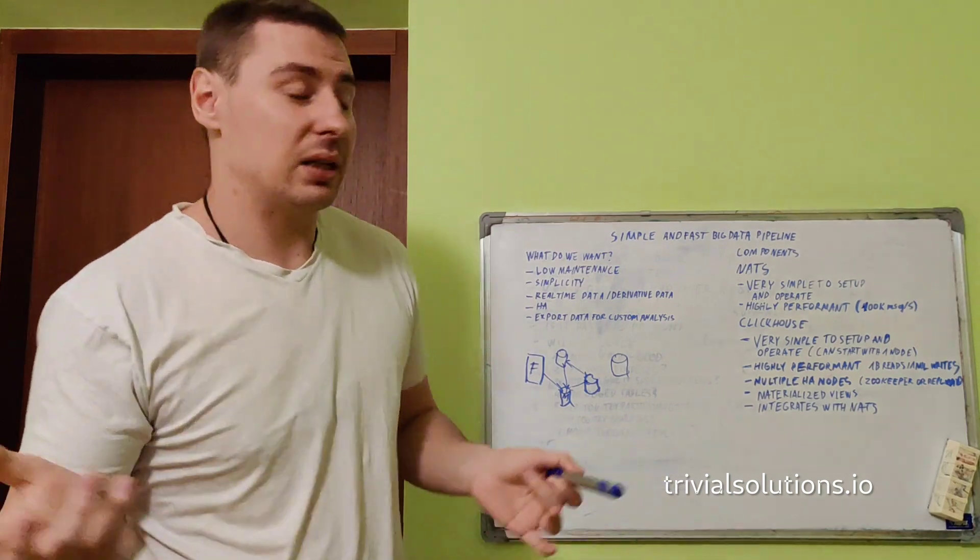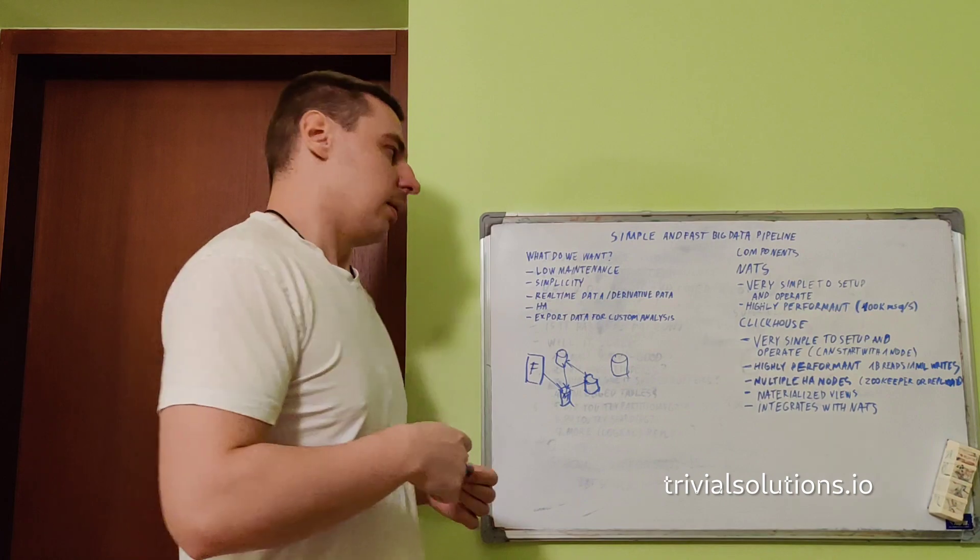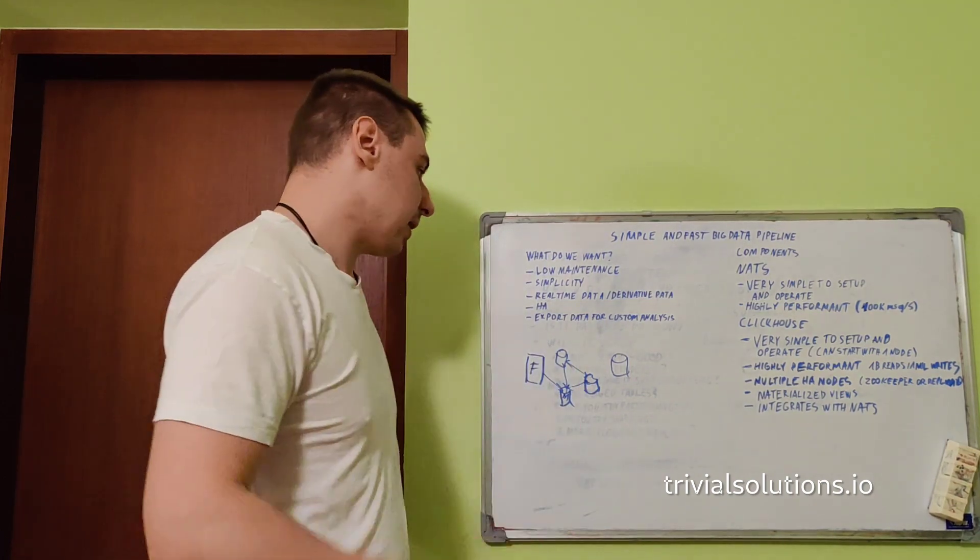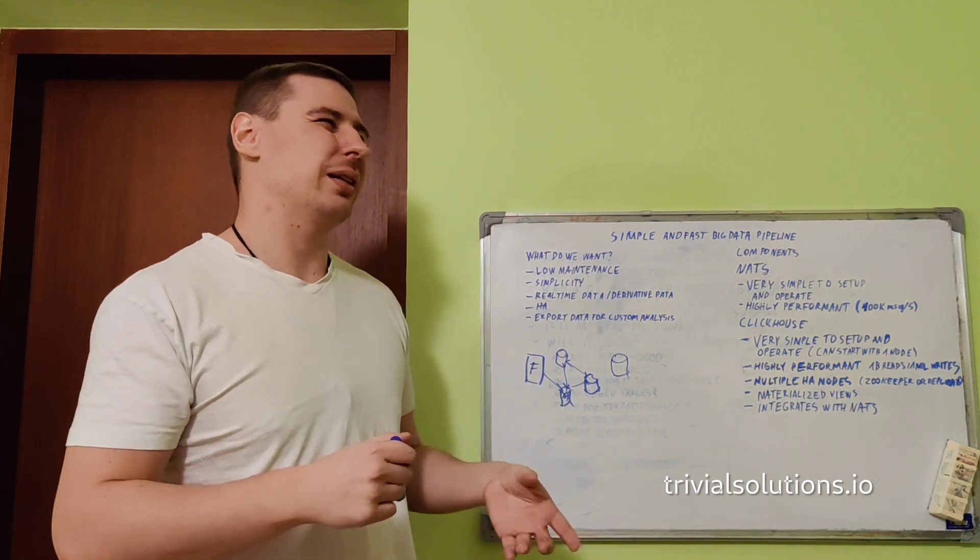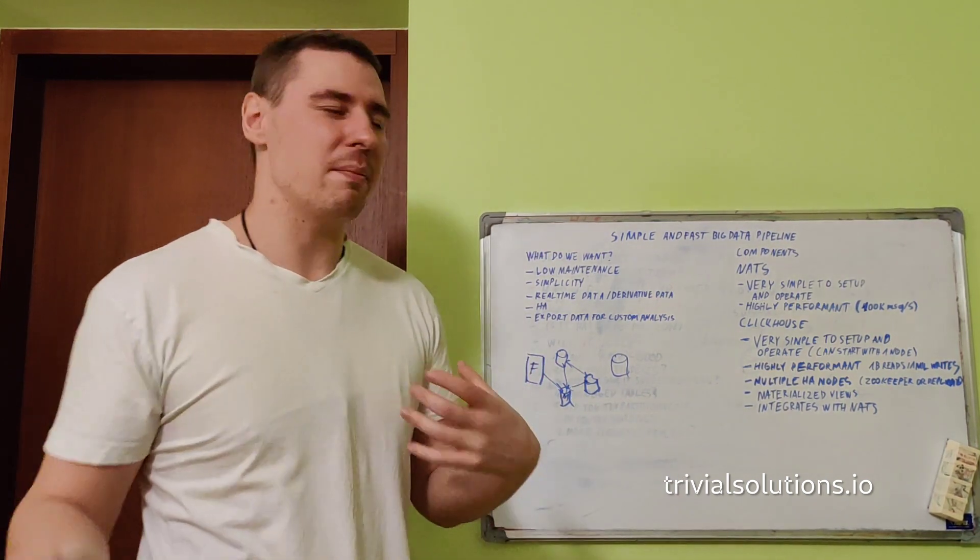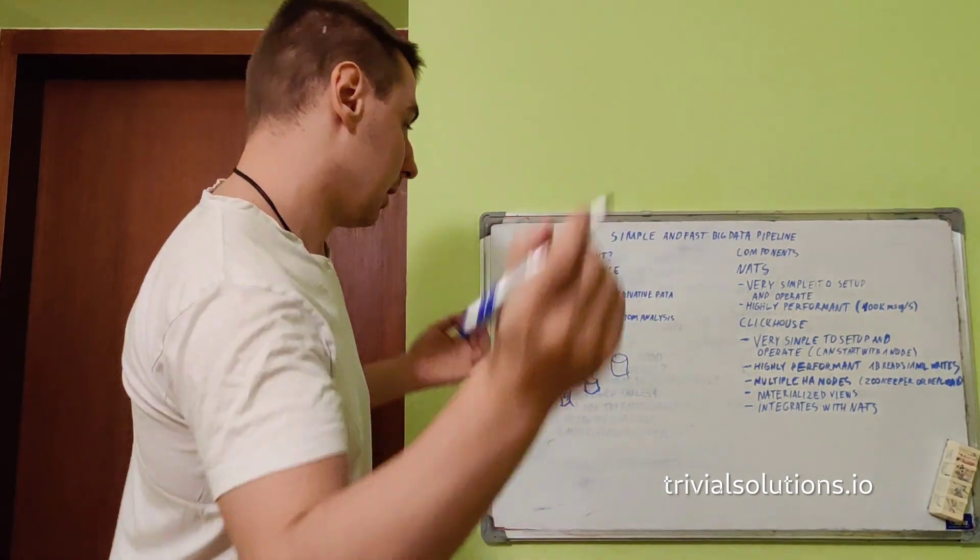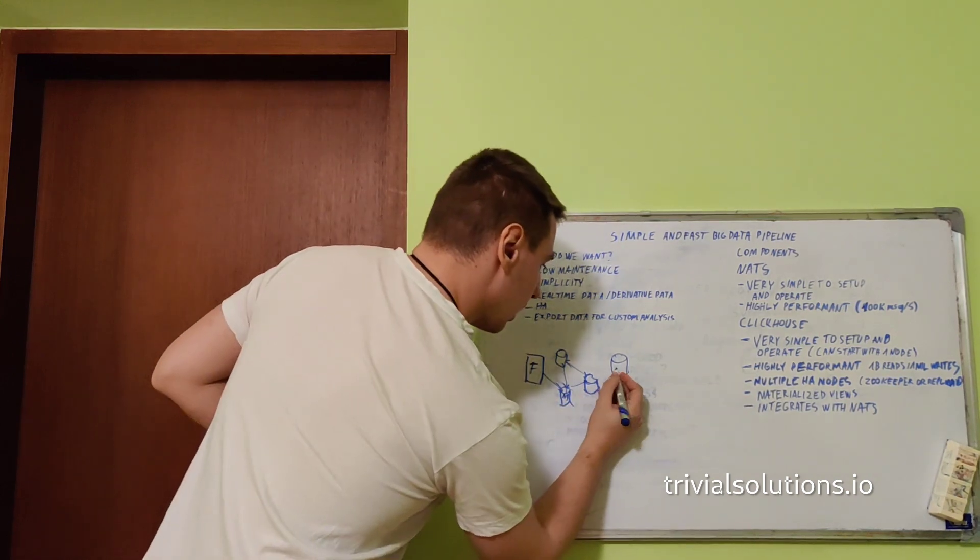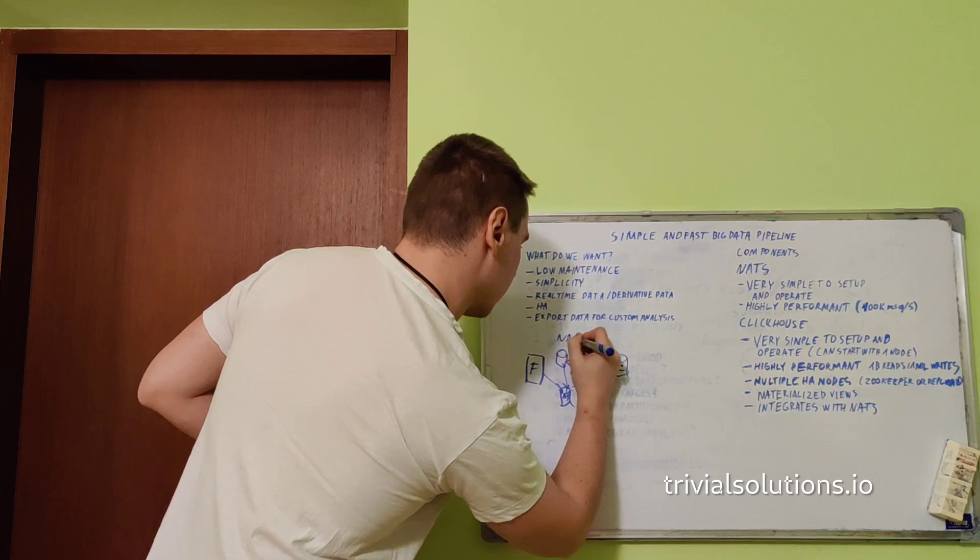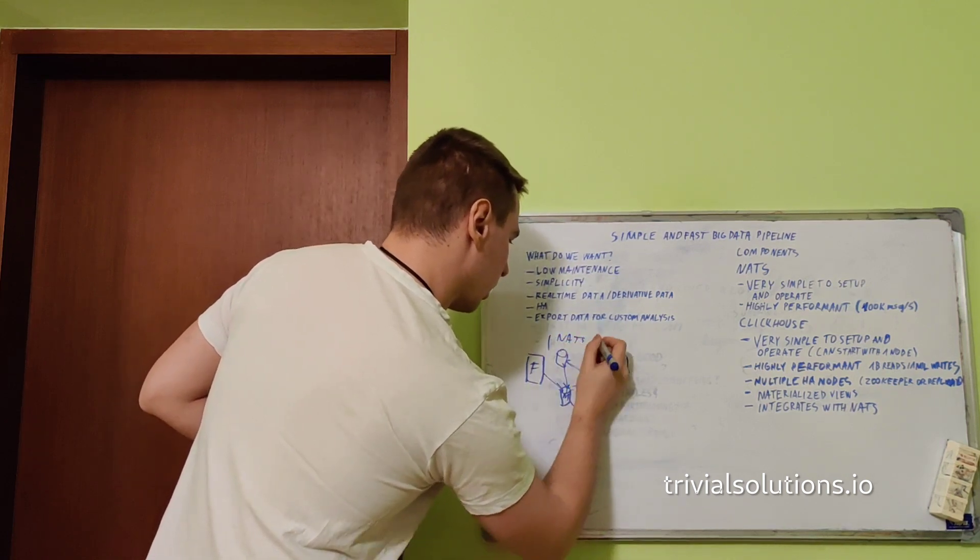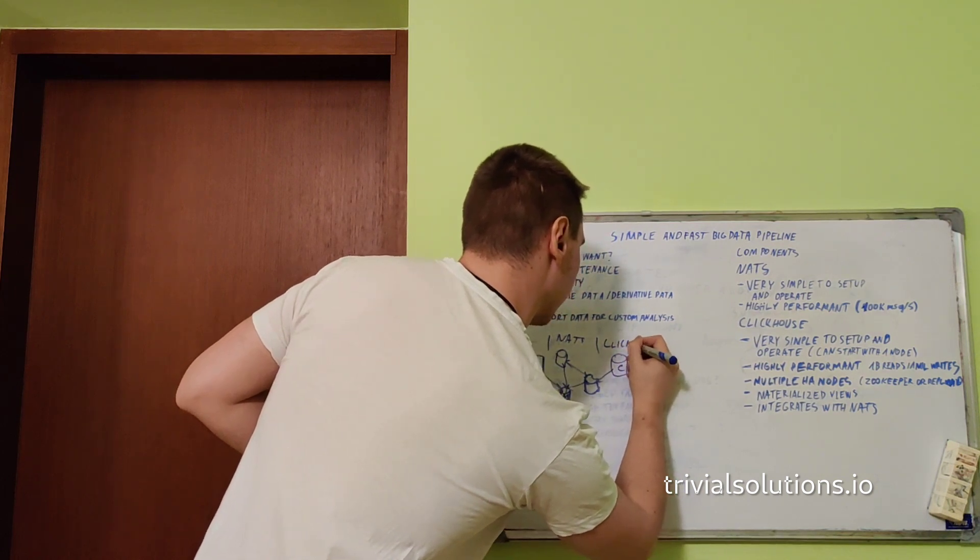These NATS instances are connected, they're replicated - there's a leader or master or whatever. You post messages here and once you post messages here it's all replicated. Now you have a ClickHouse database. You can start with even one instance. What I like about ClickHouse is other components in the industry force you to instantly need many instances and it's hard to configure.